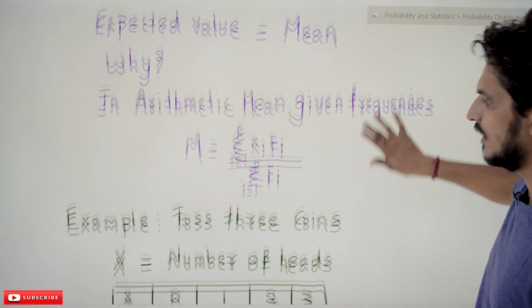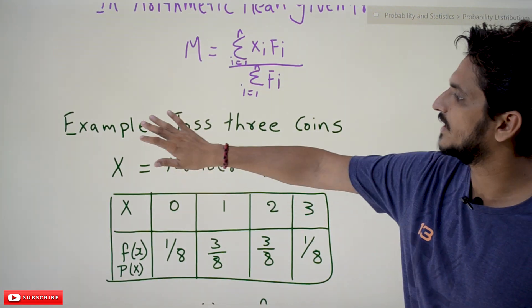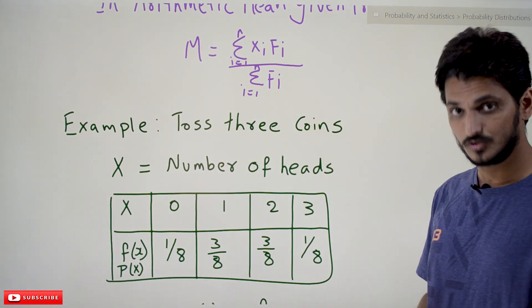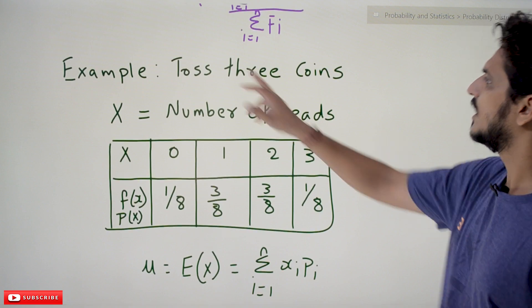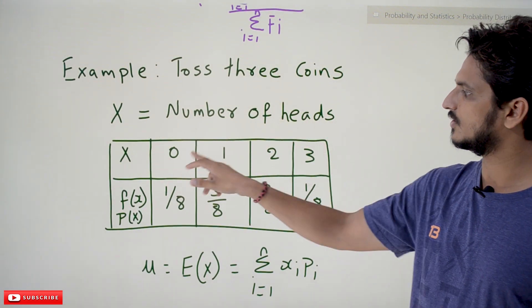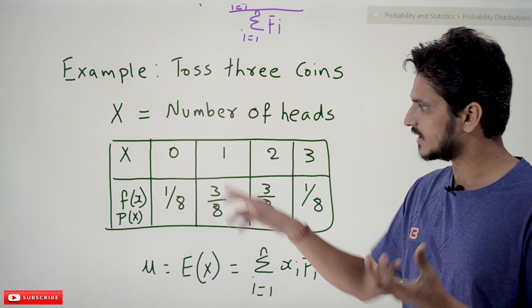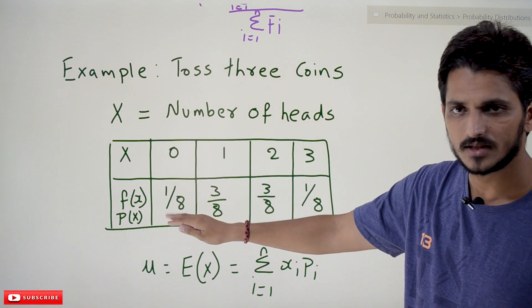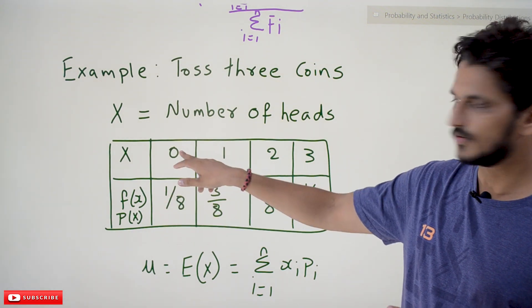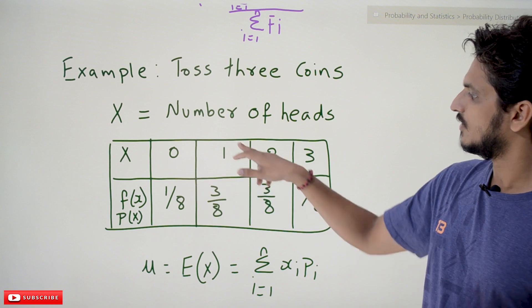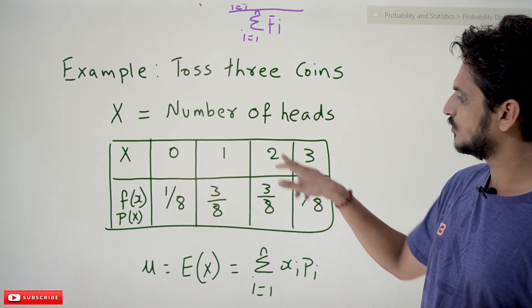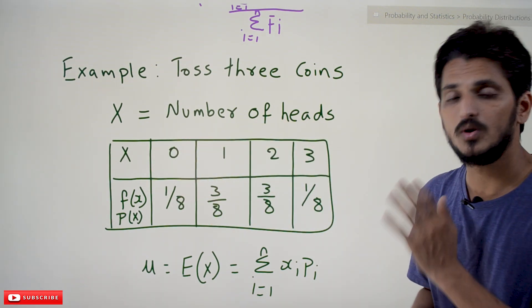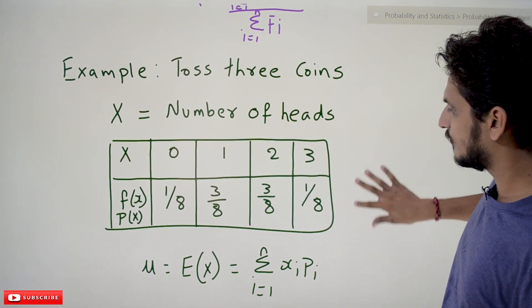Take a discrete random variable distribution: toss 3 coins — the same example used in our previous class. X equals the number of heads, so the random variable values are 0, 1, 2, and 3 heads. The corresponding probability values are: 0 heads = 1/8, 1 head = 3/8, 2 heads = 3/8, and 3 heads = 1/8. This is what we call a discrete probability distribution.